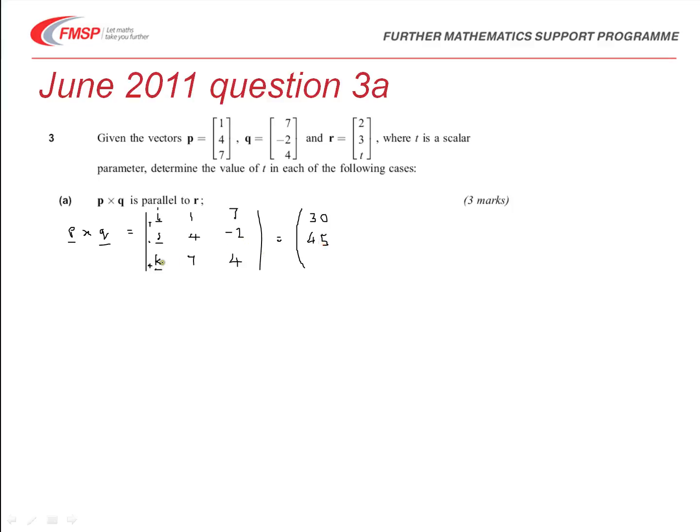And then the last entry with the K will be 1 times negative 2, 4 times the 7, so that's negative 2 take away 28, so that's negative 30.